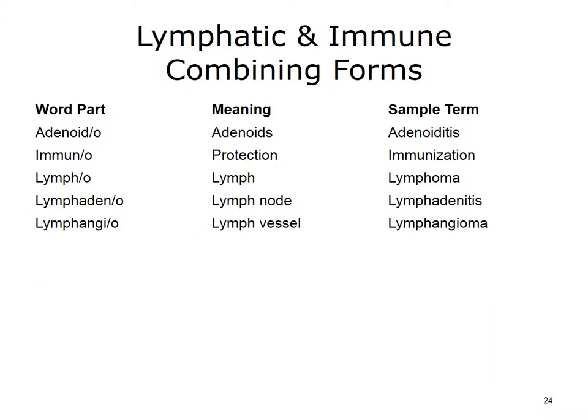Here are some key word parts for the lymphatic and immune systems along with their meanings. In the third column, you can see some of the medical terms that we can create by combining word parts. You should return to the online medical dictionary to hear the pronunciation and become familiar with the meaning of the created terms.